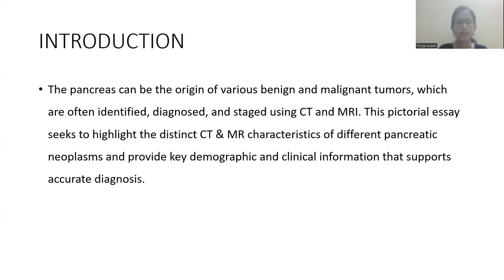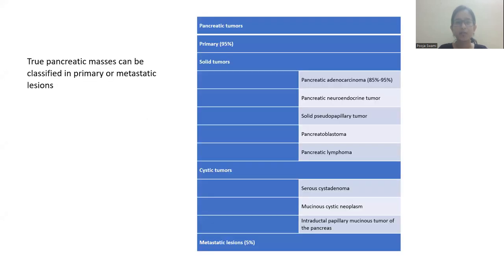We will start with the introduction. The pancreas can be the origin of various benign and malignant tumors, which are often identified, classified, and staged using CT and MRI. This pictorial essay seeks to highlight the distinct CT and MRI characteristics of different pancreatic neoplasms. Pancreatic masses can be classified as primary or metastatic lesions. Primary lesions are more common, and can be solid or cystic.